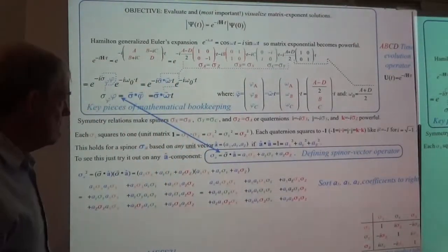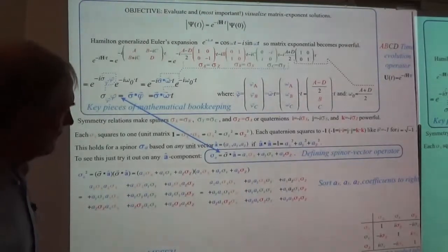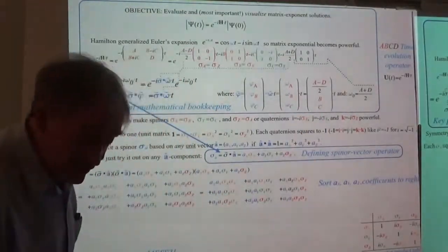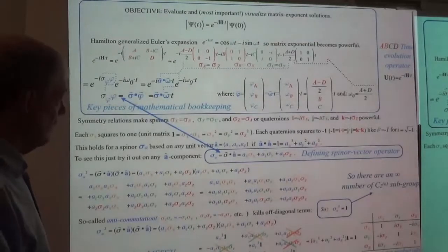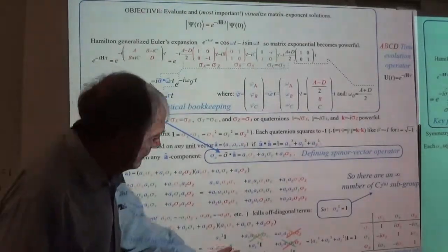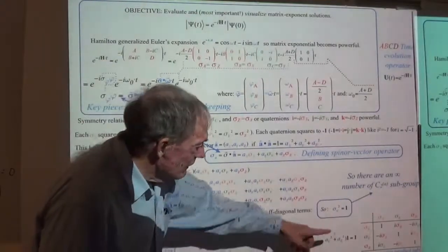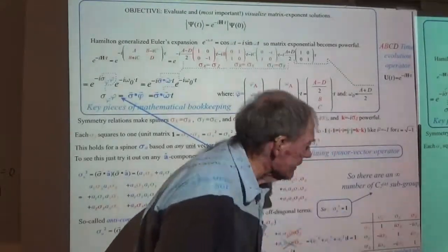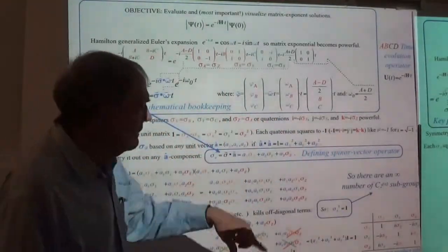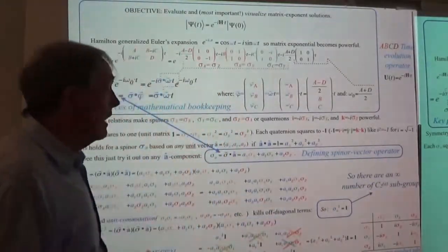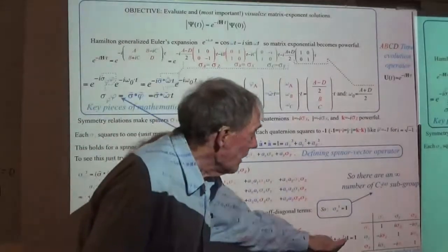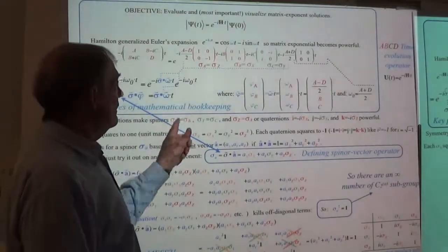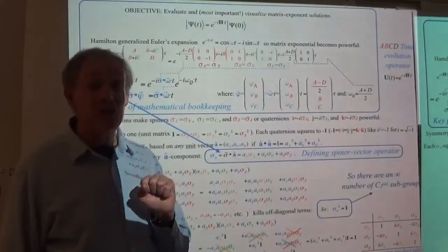It looks like sigma-A squared is a big mess. But it would help to sort the coefficients out and put the operators whose products we know in there. And sure enough, because of the anti-commutation — all of these things that are off the diagonal of this table have a minus here and a plus there — they cancel out completely. We end up with the sum of the components squared, which is the number one multiplying the matrix one. So you do get sigma-A to square to one.